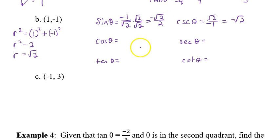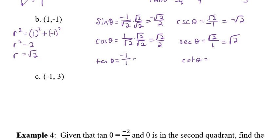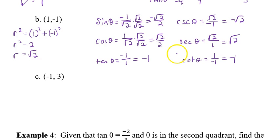Continuing part B: tangent = y/x = −1/1 = −1, and cotangent = −1 as well once simplified. Now I'll let you pause and work out part C on your own before I show the solution.